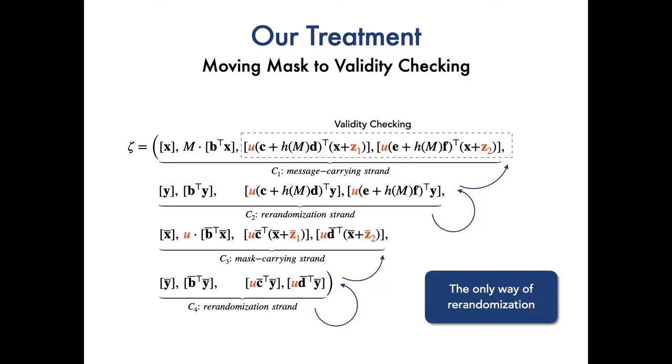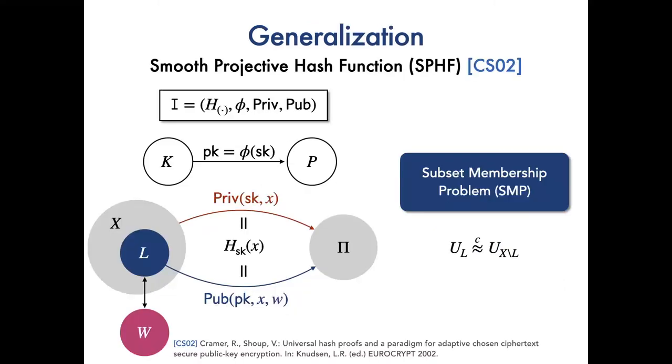So we tend to explore whether it is possible to generalize our treatment following the CS paradigm. So next, we will start by recalling the CS paradigm based on smooth projective hash function, SPHF, and then seeks to extend the notion of SPHF to interpret our proposed variants and its security.